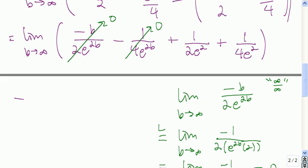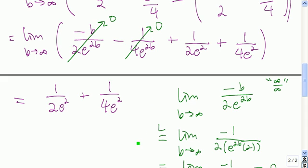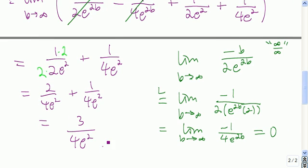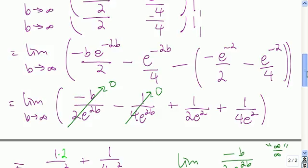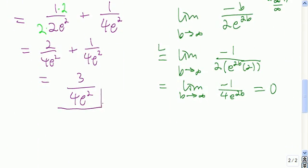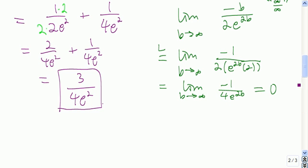Using L'Hôpital's rule, we showed that term goes to 0 as well. So the value of the limit is 1 over 2e squared plus 1 over 4e squared. Finding a common denominator, we get 2 over 4e squared plus 1 over 4e squared, which gives us 3 over 4e squared. Since the limit exists, this improper integral converges, and it's equal to 3 divided by 4e squared.